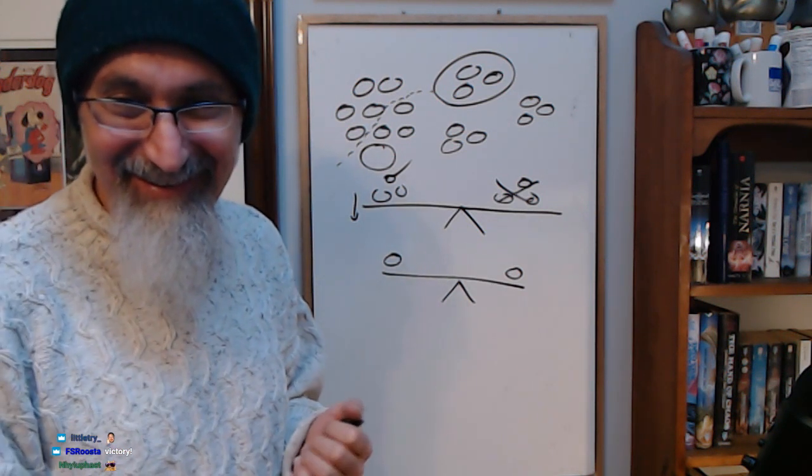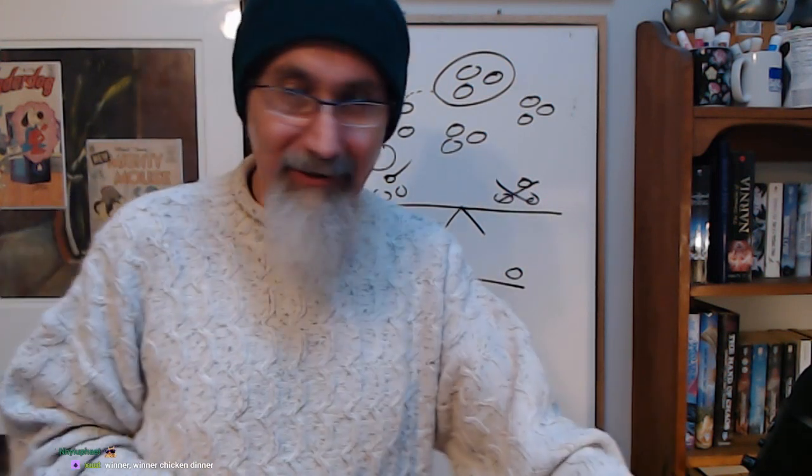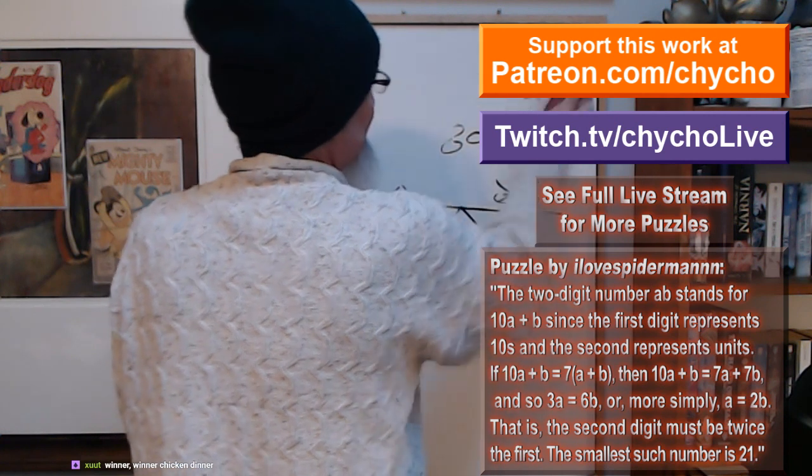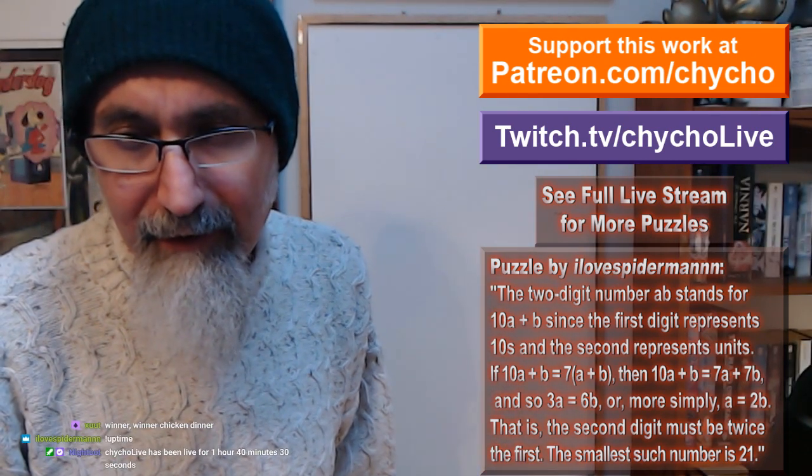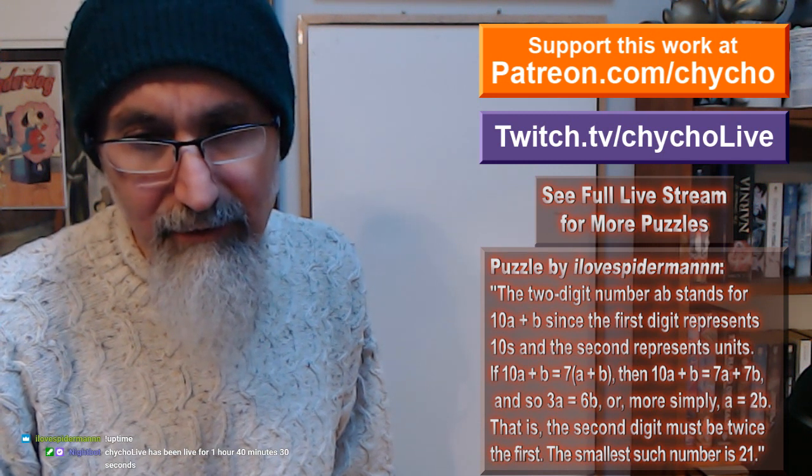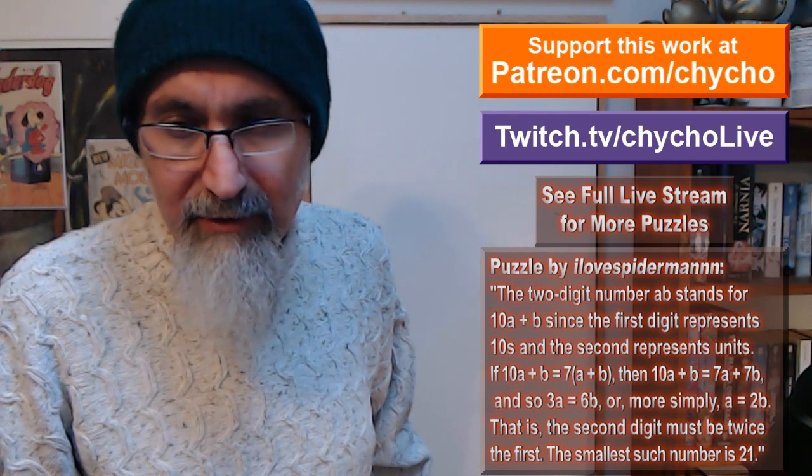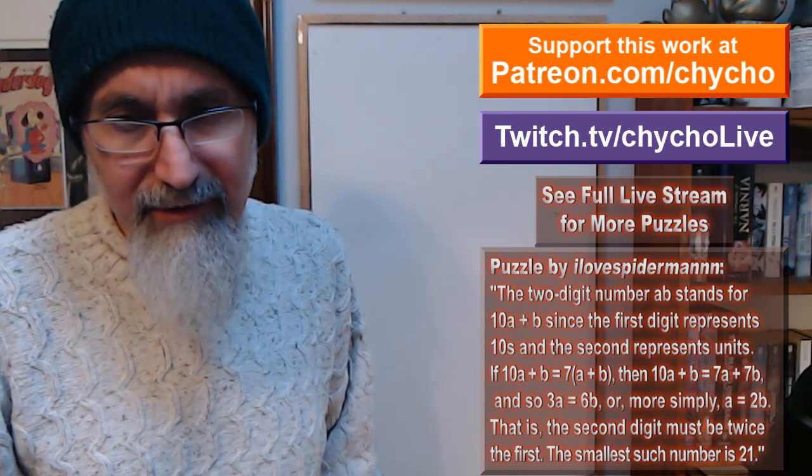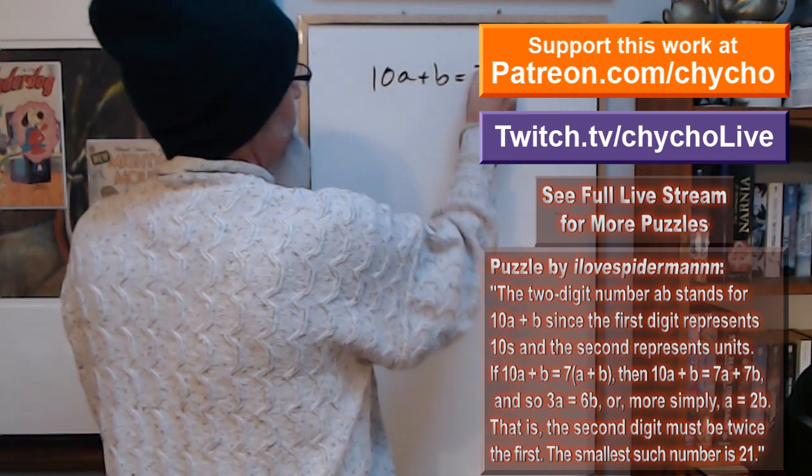Also, that was great. What was Spider-Man's little riddle? Spider-Man's question, let's check it out. The two-digit number AB stands for 10a plus b, since the first digit represents tens and the second represents units. I'm already confused. If 10a plus b equals 7a plus b, then 10a plus b equals 7a times 7b. And if 3a equals 6b, or more simply a equals 2b, that is, the second digit must be twice the first. The smallest such number is 21. I'm just going to write down the equations. That's what makes sense to me: 10a plus b equals 7a plus b.